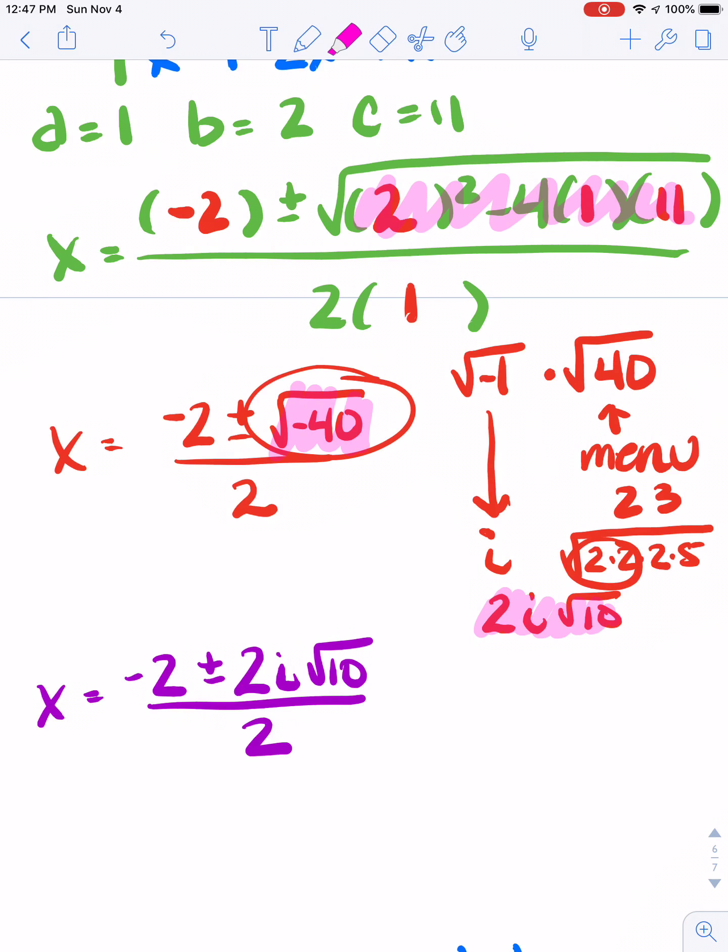Now the only thing I would say is if I look at these three values there, and I know the first one's negative, but they're all 2's. So if I divided every single one of those by 2, I can reduce this. So this part right here is just going to be -1. This down here is just going to be 1. So basically if there's a 1 on the bottom of a fraction, I can just drop it. So it's going to be -1 ± i√10.